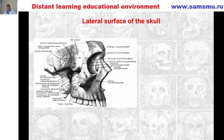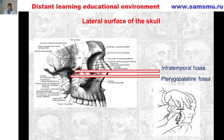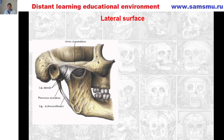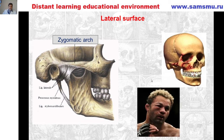On the lateral surface, you can see two fossae: first is the infratemporal fossa, and next, deeper, is the pterygopalatine fossa. They are important because many vessels and nerves are situated there. You can also see the zygomatic arch on the lateral surface — there are many fractures of this part of the skull in people who box or fight, and you can see the fracture of this man.